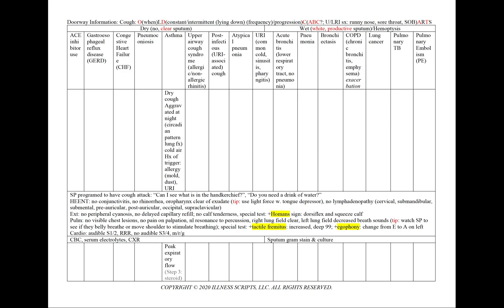In asthma, we'll see a dry cough that can be aggravated at night because there is a circadian pattern to lung function, or in cold air. We could have a history of triggers such as allergens — either mold or dust mites — or a recent URI. We'll order a peak expiratory flow.